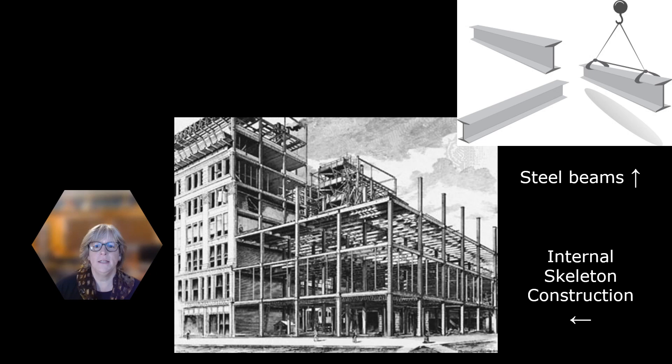By the mid-1800s, there was rapid social and economic growth along with the development of inexpensive, versatile steel, which made great advances for architects of that day. Steel became mass-produced, which enabled the ability to build skyscrapers. By the 1880s, architects could now build thin, tall walls and slender buildings with more lightweight steel skeletons.